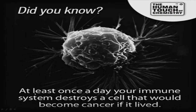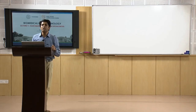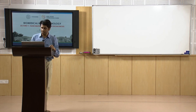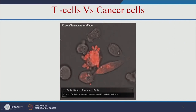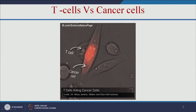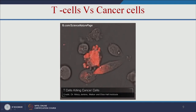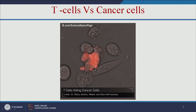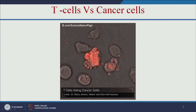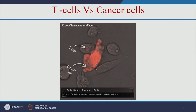An interesting fact about cancer: at least once a day, your immune system destroys a cell that would become a cancer cell if it lived. That means every day, some cells are trying to become cancer cells. If your immune system is strong, it can destroy them. The long cell in this animation is a cancer cell and the T cell is the immune cell — it comes and attacks the cancer cell, destroying it.